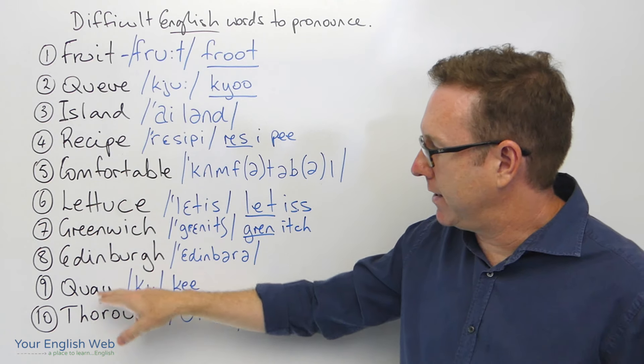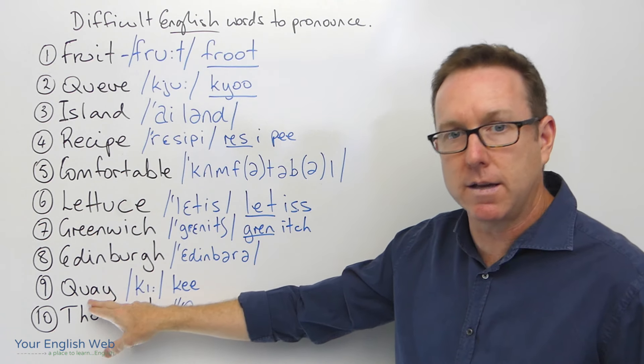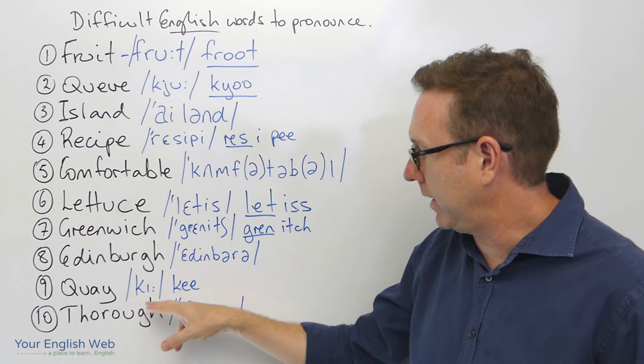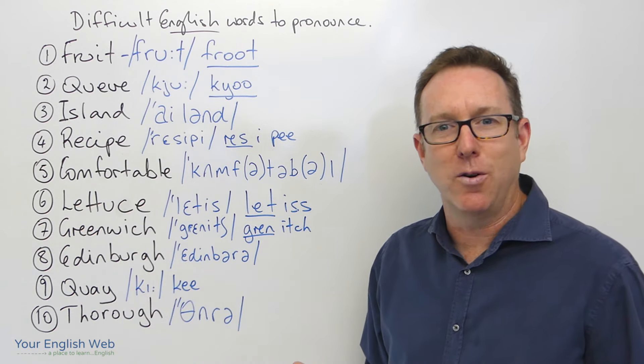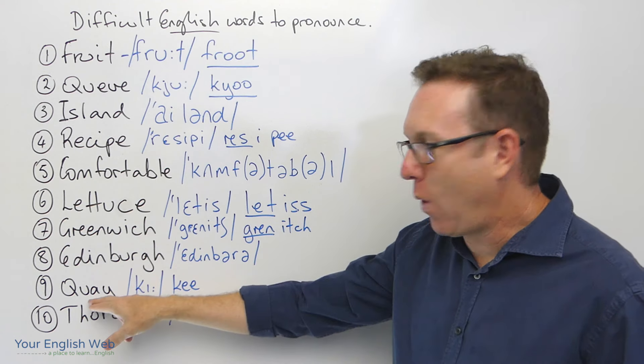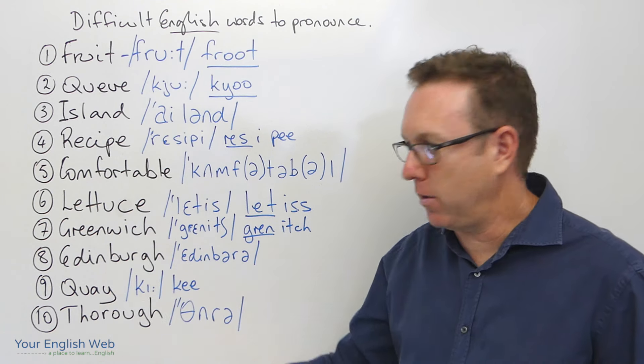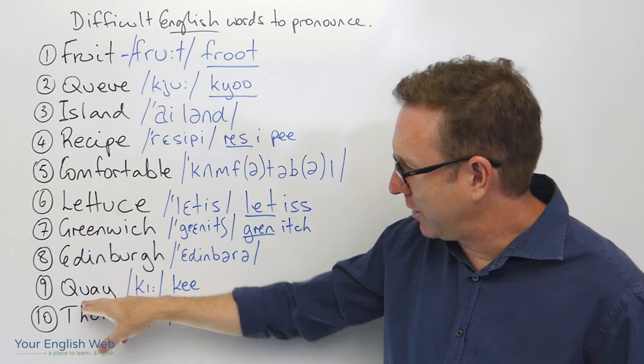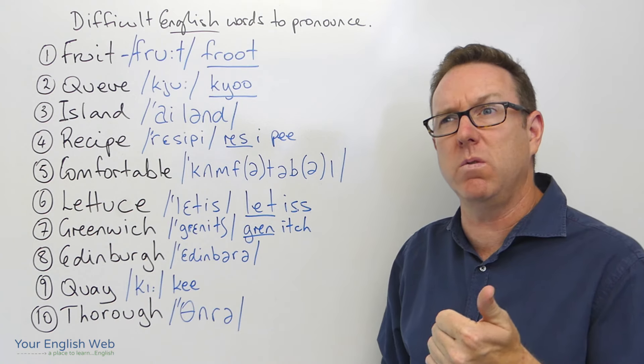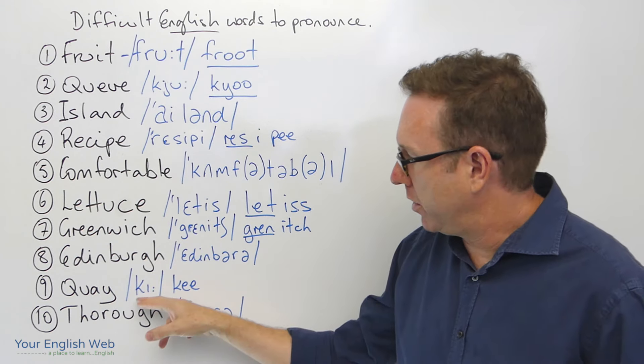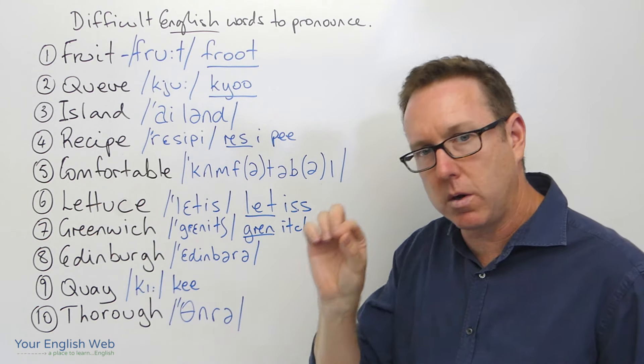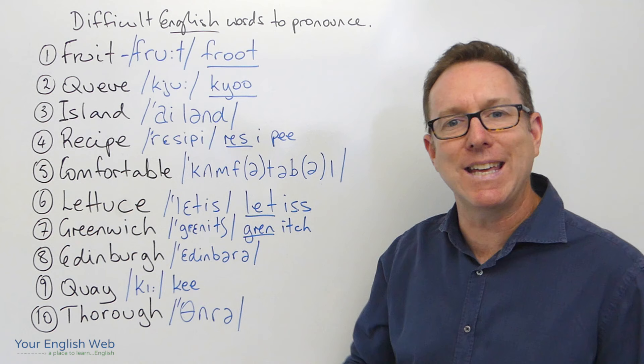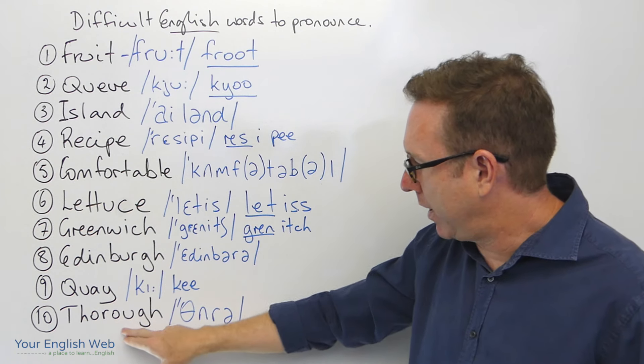The next one is quay, quay, quay. Not quay, not quay. Obviously, you would look at that word and you'd say, well, Q, but no, the pronunciation is quay. Again, with these two little long vowel sound, quay.